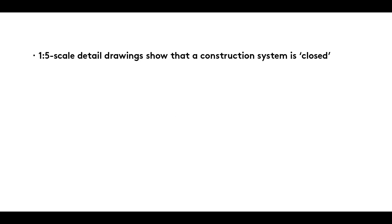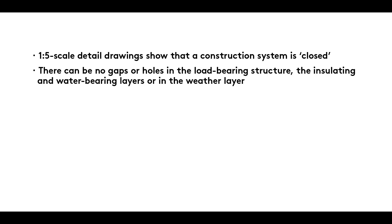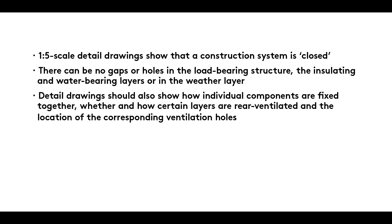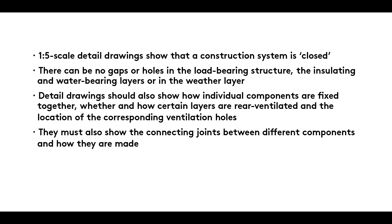Summary: 1:5 scale detail drawings show that a construction system is closed. There can be no gaps or holes in the load-bearing structure, the insulating and water-bearing layers, or in the weather layer. Detail drawings should also show how individual components are fixed together, whether and how certain layers are rear ventilated, and the location of the corresponding ventilation holes. They must also show the connecting joints between different components and how they are made.